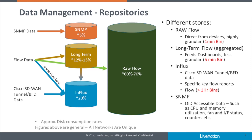The SNMP store will be amongst your smallest in terms of data volume. In general, the data returned from SNMP polling is much less dense, as it is usually OID values, and does not include source, destination, application, or QoS information that is normal for flow data.